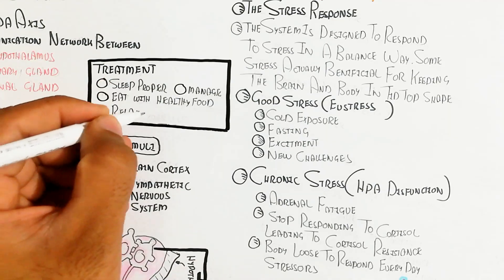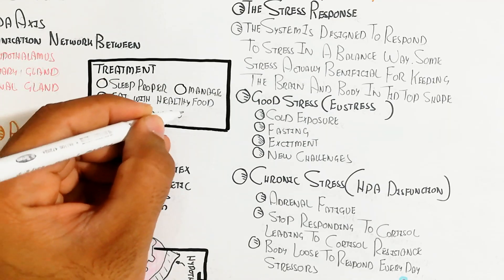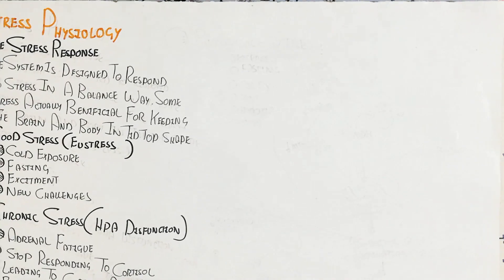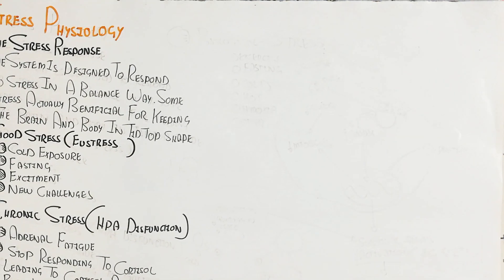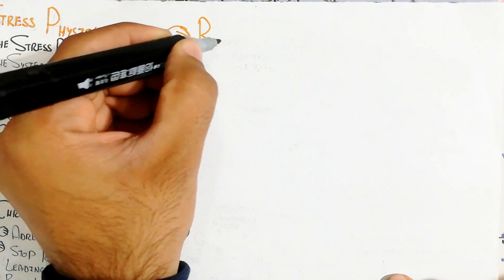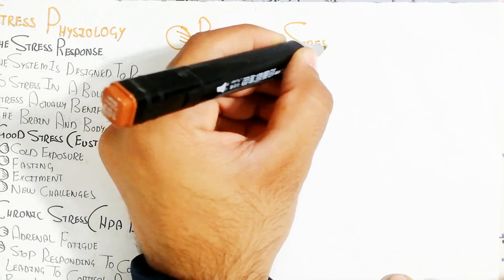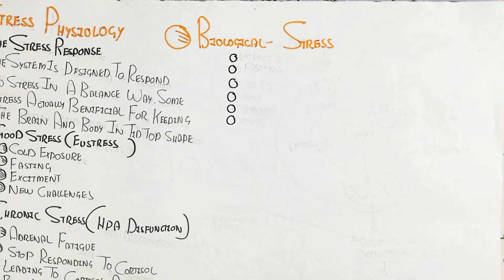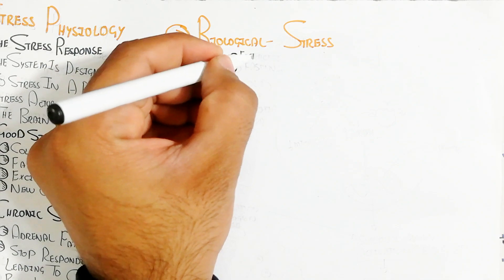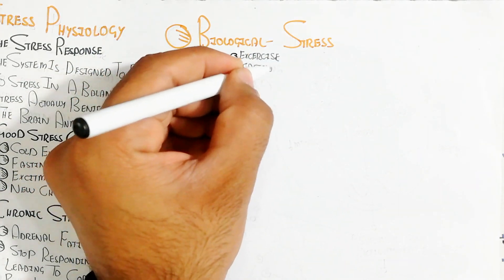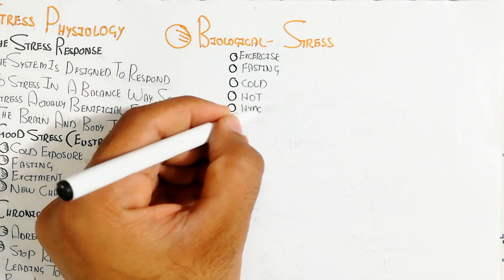The treatment for chronic stress includes sleeping properly, managing stress, eating healthy food, and relaxing yourself using various relaxation strategies to inhibit chronic stress. Now let's understand biological stress at the cellular mechanism level, for example through exercise, fasting, cold, hypoxia, and other stressors.